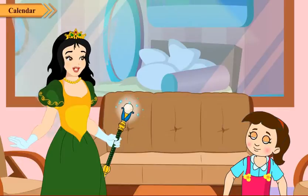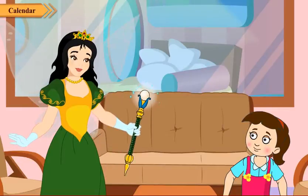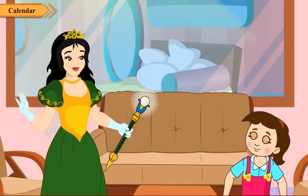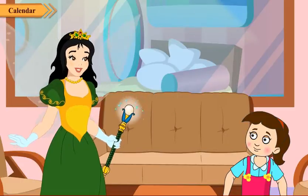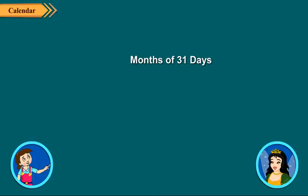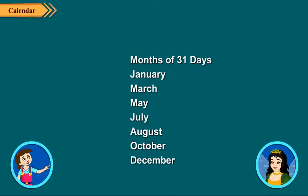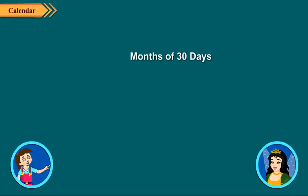Some have 31 days, some have 30 days, and February has 28 or 29 days. The months with 31 days are January, March, May, July, August, October and December. The remaining months — April, June, September and November — each have 30 days.